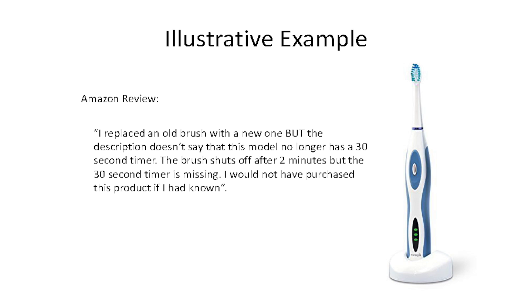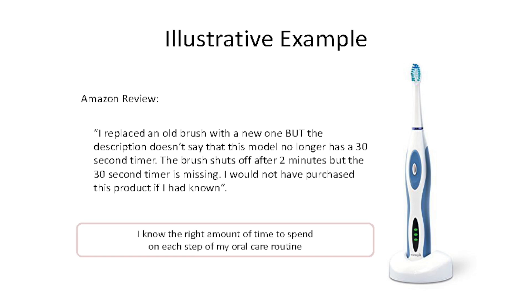Two things we learn from this review. One is that a 30-second timer is really important for this customer. We might guess that the underlying customer benefit — what the customer really wants from the 30-second timer — is that she wants to know the exact amount of time to spend on different steps of the oral care routine. This step from understanding the product attribute to the underlying customer benefit is best done by human judgment; it requires you to relate to the customer experience.